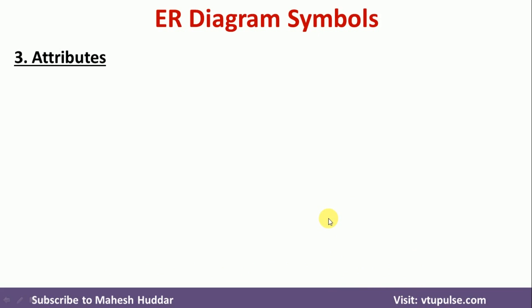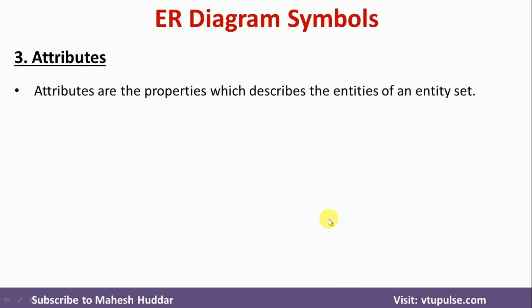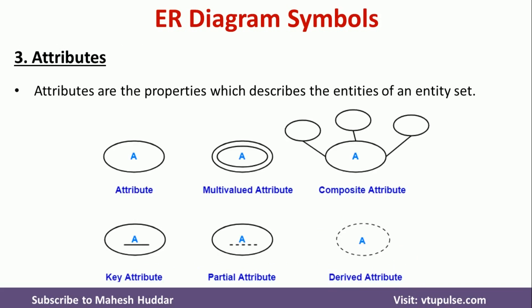Coming to the third component — Attributes. Attributes are the properties which describe the entities of an entity set. There are different types of attributes: a simple attribute, a multi-valued attribute where attributes may have multiple values, a composite attribute, and so on. We will discuss these attributes in detail in the next video.